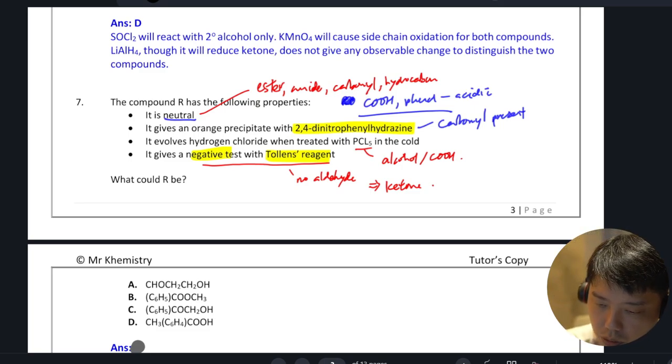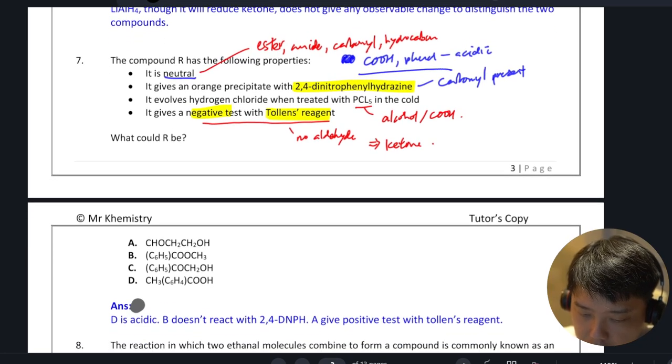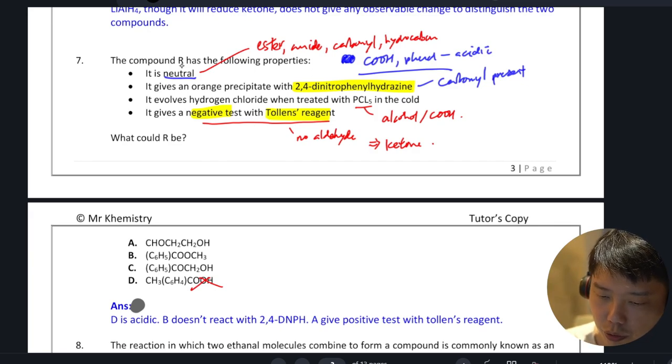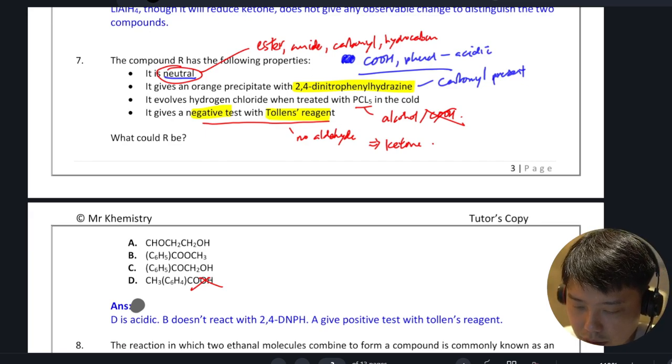So what are the functional groups that are possible? Let's look down here. Those with carboxylic acid, we can actually rule out because the compound has to be neutral. So we can rule out the carboxylic acid.